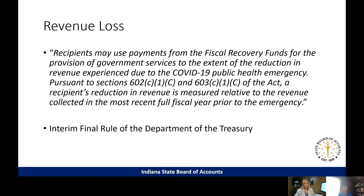In reference to revenue loss, the interim final rule specifically says that recipients — local governments — may use payments from the fiscal recovery funds for the provision of government services to the extent of the reduction in revenue experienced due to the COVID-19 public health emergency. It references sections 602(c)(1)(C) for states and 603(c)(1)(C) for local units. The reduction in revenue is measured relative to revenue collected in the most recent full fiscal year prior to the emergency, which for all of us is 2019.